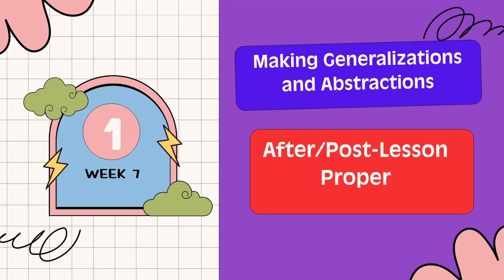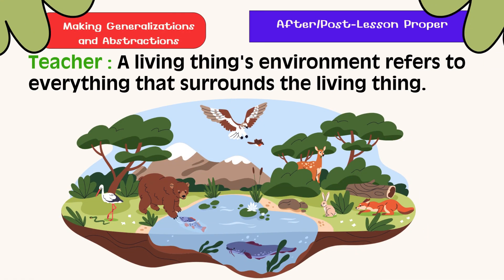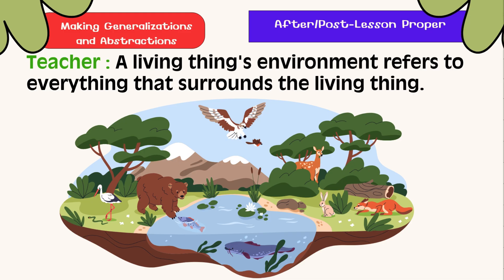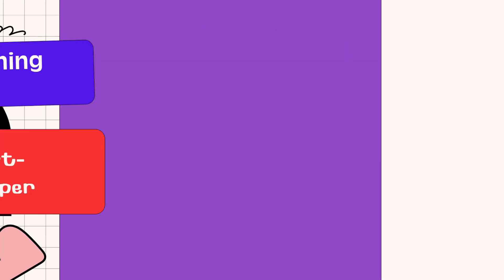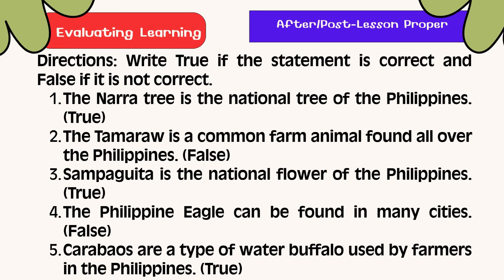Making Generalization: A living thing's environment refers to everything that surrounds the living thing, just like what you see in the illustration. Evaluating Learning: Write 'true' if the statement is correct and 'false' if it is not correct.